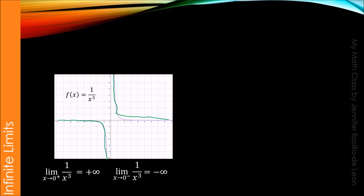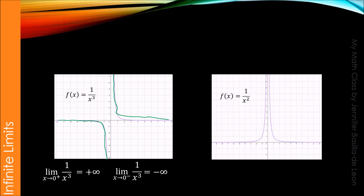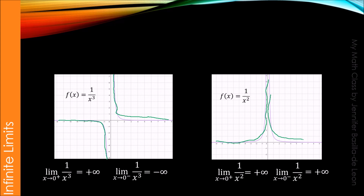Now consider the limit of 1 over x squared as x approaches 0 from the right. Using the graph of 1 over x squared, we can conclude that the limit of 1 over x squared as x approaches 0 from the right is positive infinity. We will also have positive infinity for the limit of 1 over x squared as x approaches 0 from the left. Note that as x approaches 0 from the left, the graph increases without bound. Hence, the limit of 1 over x squared as x approaches 0 from the left is positive infinity.